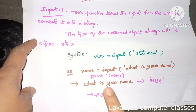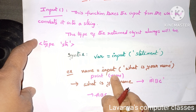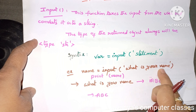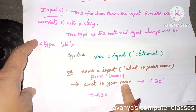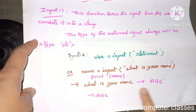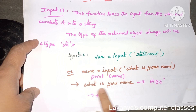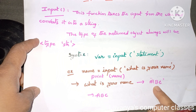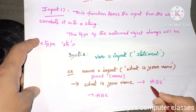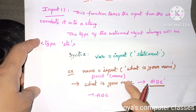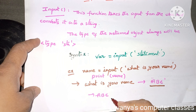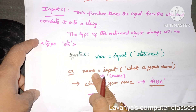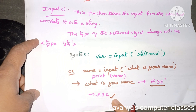Whenever we execute the program and the compiler reaches the input function, it stops there and waits. Whatever sentence you wrote inside the input function is printed on the screen, and it waits for the user to enter data. For example, it displays 'What is your name?' and waits. If I enter ABC, then print name prints the value ABC.